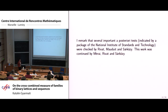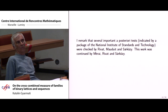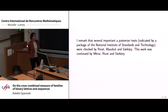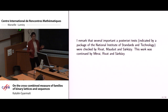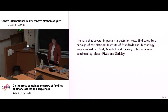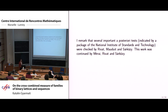This construction was also tested by several tests of the National Institute of Standards and Technology. Rivat, Mauduit, and Sárközy computed several measures by computer, and also proved that if the sequence has a strong well-distribution measure and correlation measure, then several tests are almost passed. The proof was slightly weaker than what the test required, but only very slightly — it was a theoretical proof, not a computer proof. This work was later continued by Mérai, Rivat, and Sárközy.